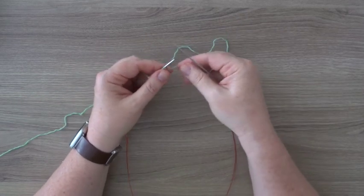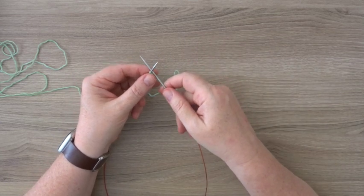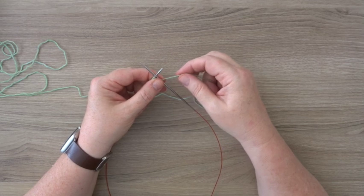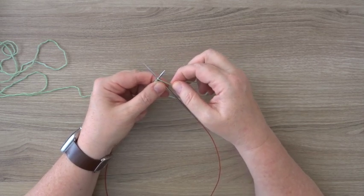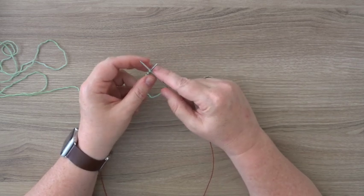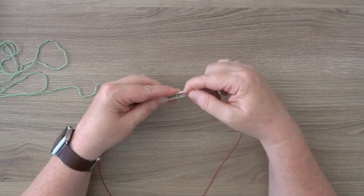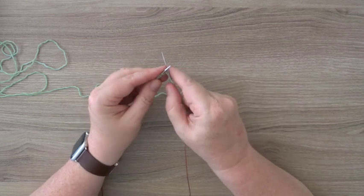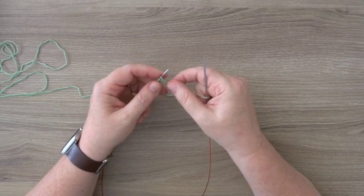This cast-on makes really nice pairs of stitches, so it's excellent for a 2x2 ribbing, for example. Put your needle under the left needle, loop the working yarn around the left needle and around the right needle. Knit a stitch, swivel it under the needle, and put it on the needle from back to front.